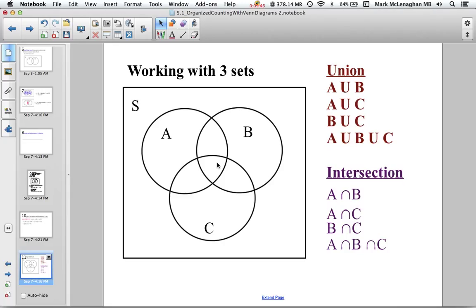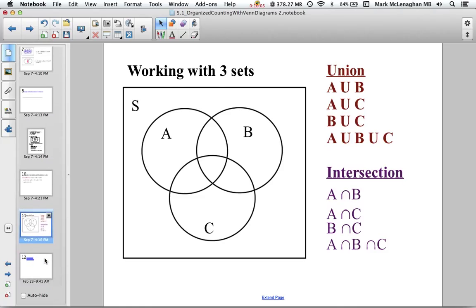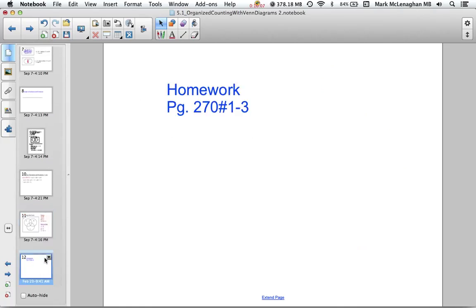Whenever we're working with a Venn diagram, we have to fill in the numbers. I like to work from the middle, so I do the intersection of all three, the intersection of two, the intersection of the other two, and then work my way out. That way I get all the numbers satisfied. There are some questions to try and we'll discuss and spend a bit more time in class tomorrow. Thanks, we'll be back in class.